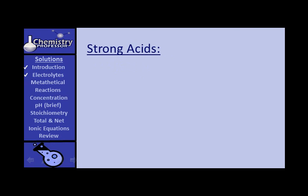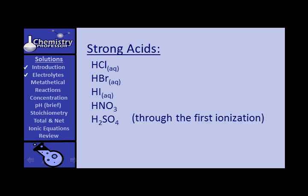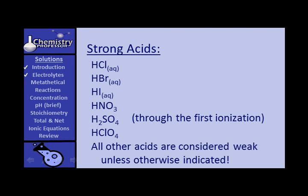Let's begin with the strong acids. This is a list you need to memorize. The strong acids are hydrochloric acid, hydrobromic acid, hydroiodic acid, nitric acid, and sulfuric acid. Note that sulfuric acid has two hydrogens — it is a strong acid only through the first dissociation or ionization; the other part is weak. And perchloric acid. There are some other strong acids, but we're not likely to run into them. All other acids are considered weak unless otherwise indicated.